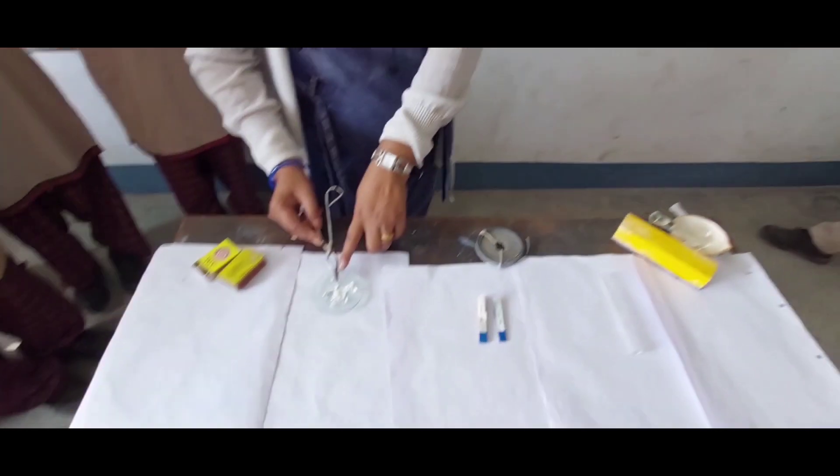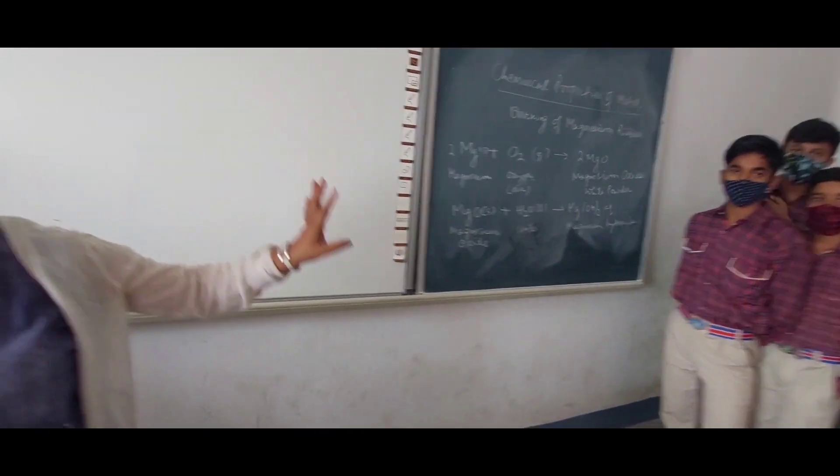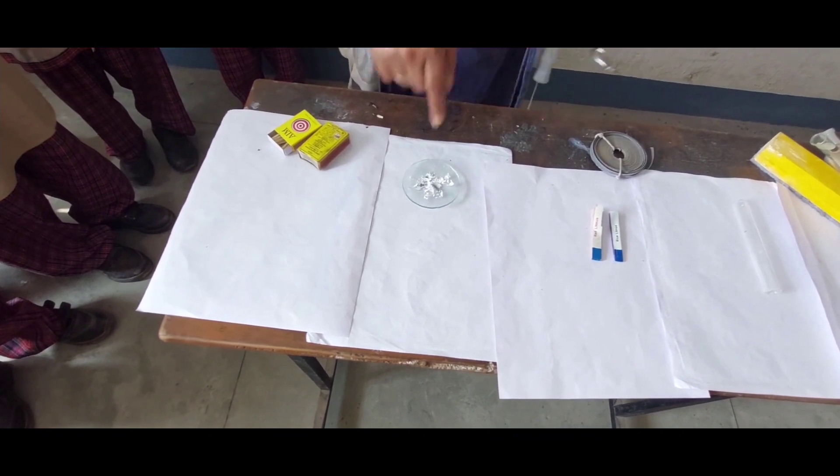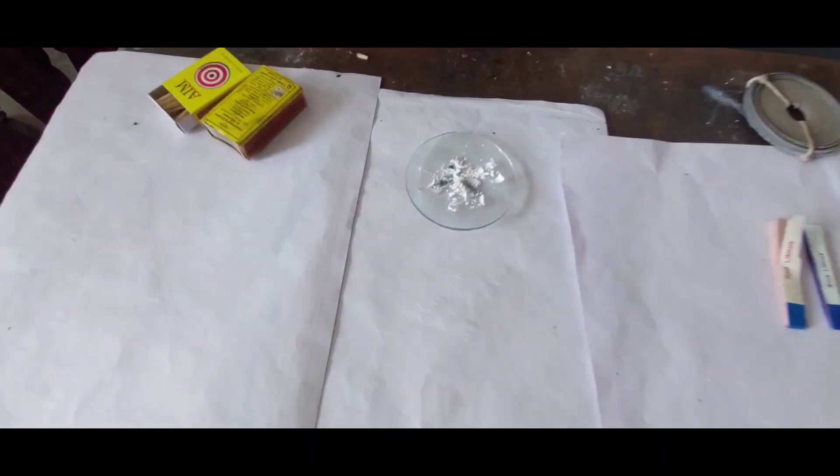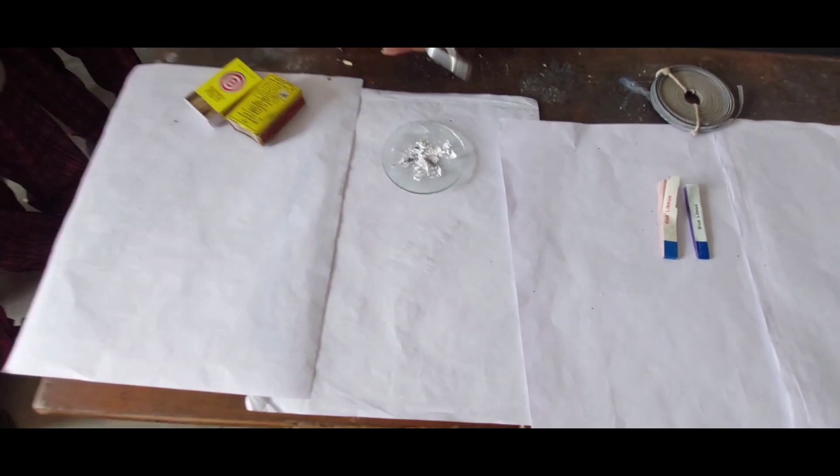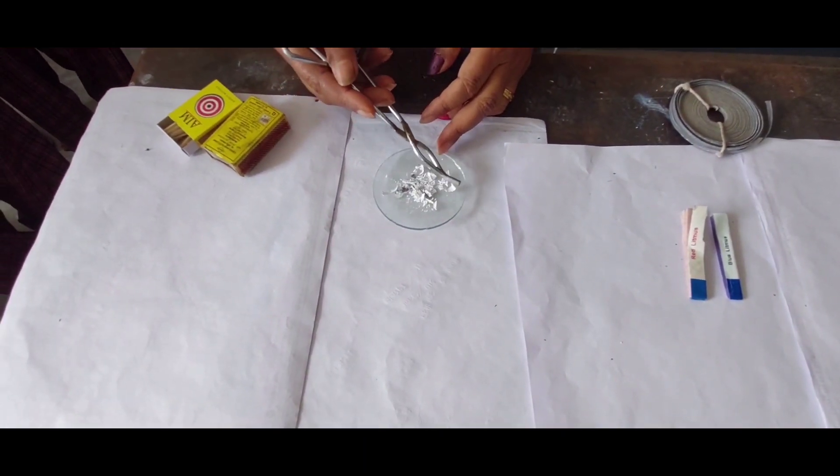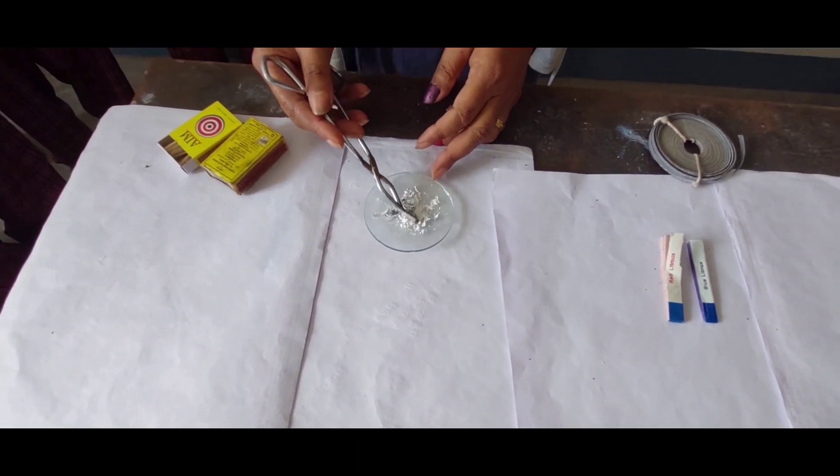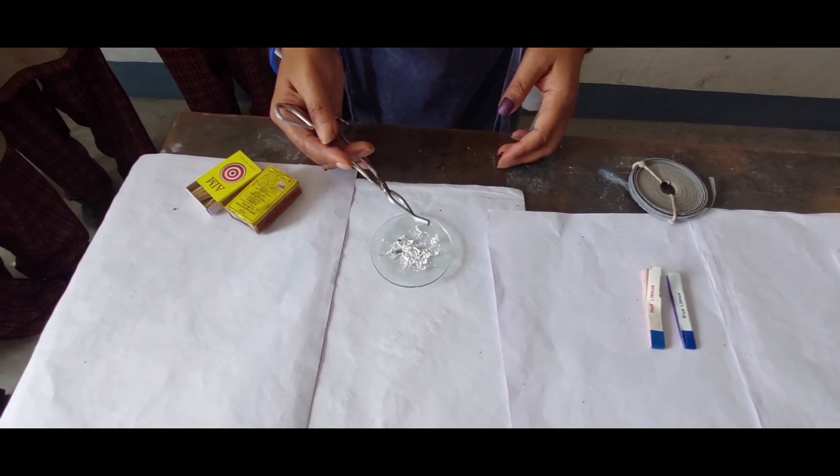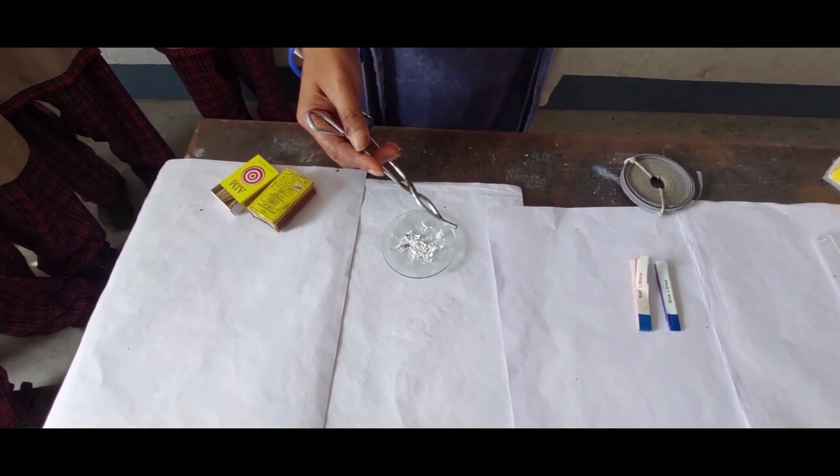Now let's see what magnesium reacted with oxygen to form. Magnesium oxide with water - let's check the characteristics of this magnesium oxide. This is white powder, and its characteristic is that magnesium oxide is a base.